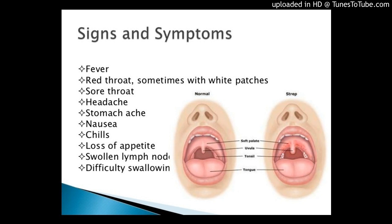Symptoms of pneumonia include fever and chills, cough, rapid breathing or difficulty breathing, and chest pain. Skin and soft tissue infections often appear as a bump or infected area on the skin that may be red, swollen or painful, warm to the touch, or full of pus or other drainage.